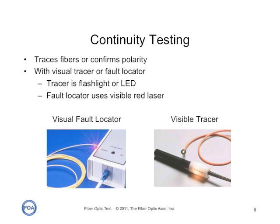The simplest form of testing is continuity testing, which confirms that the fibers are continuous and they're connected properly. Since fiber networks use two fibers — one transmitting in each direction — polarity is important to ensure that transmitters are connected to receivers and vice versa. Typically, continuity testing is done with a visual tracer, which might be made out of a flashlight or a simple LED, or a visual fault locator, which uses a red visible laser source.